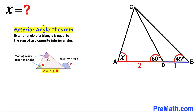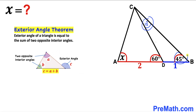Applying the exterior angle theorem — the exterior angle of a triangle equals the sum of the two opposite interior angles — we can identify our exterior angle and the two opposite interior angles in our diagram. Therefore this unknown angle must be 15 degrees, since adding these two angles must equal 60 degrees.